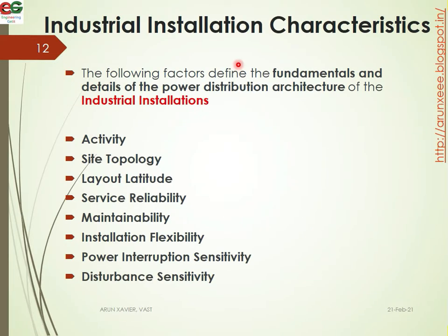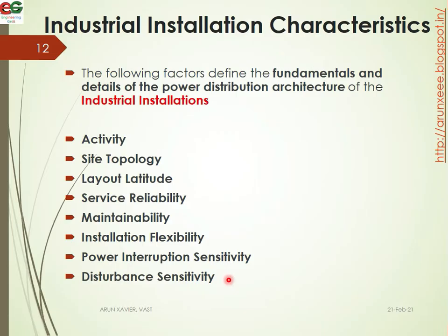We are going to discuss Industrial Installation Characteristics. The following factors are defined — the fundamentals and the details of the Power Distribution Architecture of Industrial Installations. The factors include: Activity, Site Topology, Layout Latitude, Serviceability, Maintainability, Installation Flexibility, Power Interruption Sensitivity, and Disturbance Sensitivity.